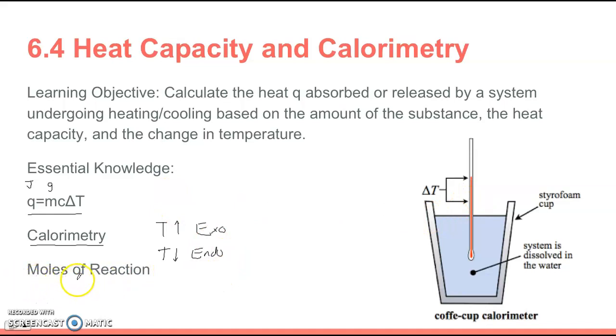Another thing you want to know is moles of reaction. Sometimes you have to determine an enthalpy change in terms of kilojoules per mole of reaction. The way you get the kilojoules is by using Q equals mc delta T. When you do this equation, you find Q in terms of joules, and you can divide by 1,000 to get to kilojoules.